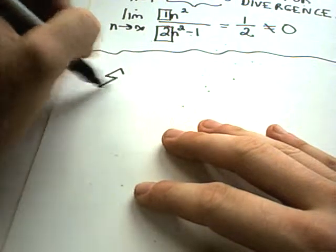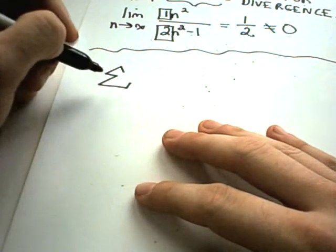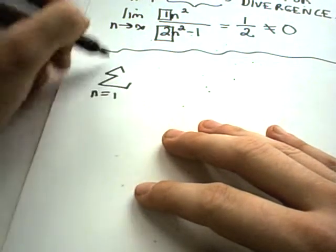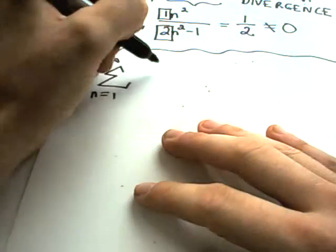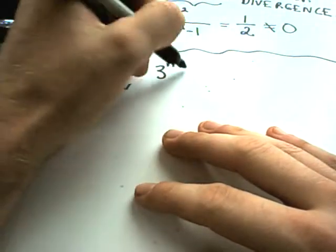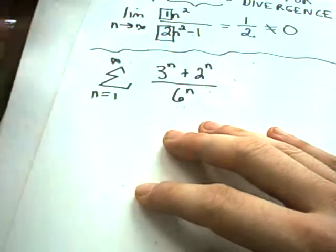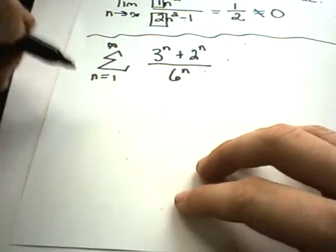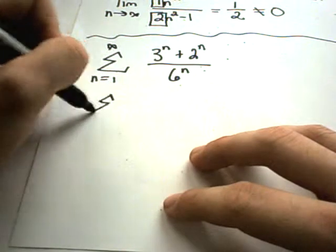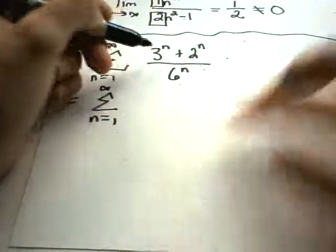Let's do one more example here for the road. Suppose I have this series, 3 to the n plus 2 to the n over 6 to the n. In this example, I'm just going to bust up my fraction. So I can write this.